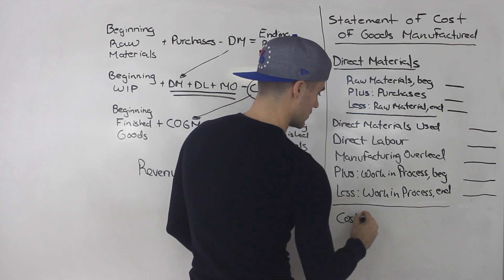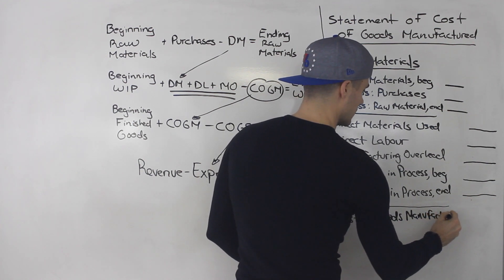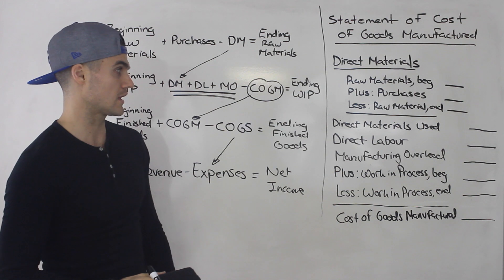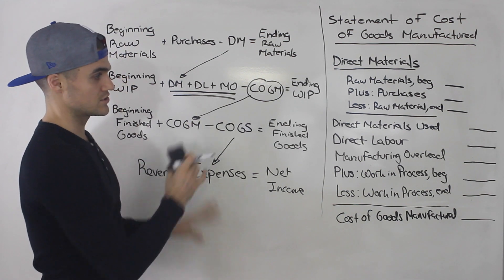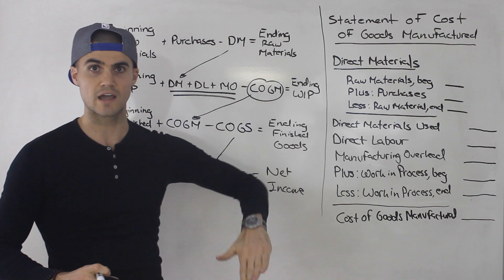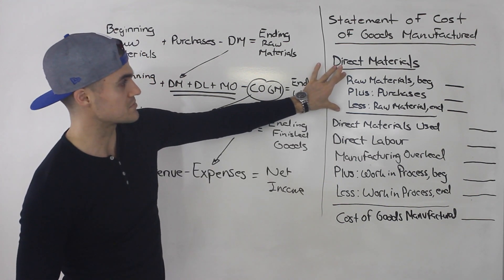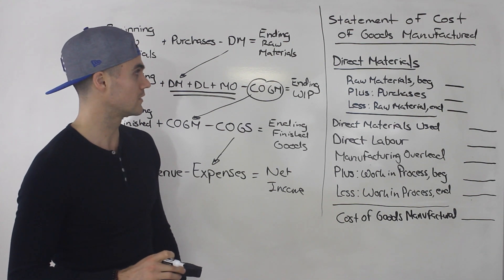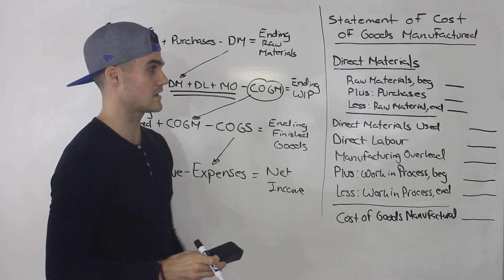So our final amount is the cost of goods manufactured, and you'll have that amount right there. That's pretty much how the statement of cost of goods manufactured is organized — it's basically just taking these formulas from the flowchart and rearranging them. Just a heads up: manufacturing overhead will often show a list of specific items, so the statement can be longer. And sometimes they may not show the direct materials breakdown, just the direct materials used, but a lot of times they do show that part.